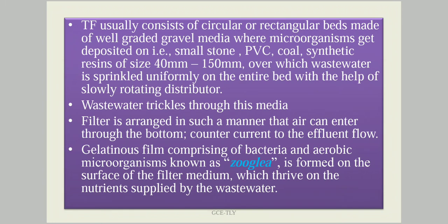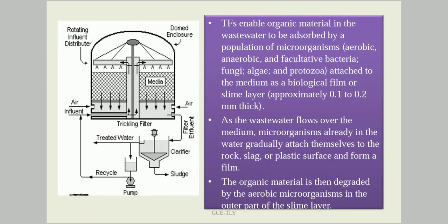Here you can see the typical flow diagram of the trickling filter, where water enters at the center line and is spread through the rotating distributor over the media. The water trickles down through the media where microbes are attached; it gets treated and the treated water comes out at the bottom. It is collected in a drainage pipe and taken to a clarifier, where suspended matter is removed in the form of sludge, while treated water is taken for further treatment or disposal.